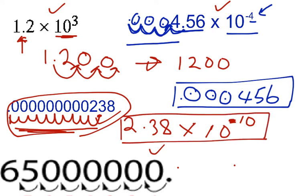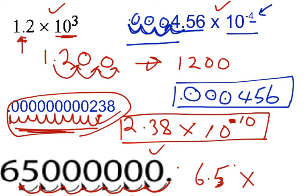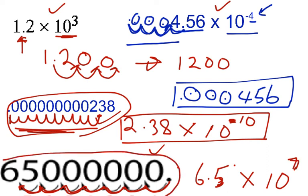This last one is a big number, because the decimal is at the back. We need to put it in scientific notation. So we simply move the decimal again: 1, 2, 3, 4, 5, 6, 7 places. 6.5 is greater than or equal to 1 but less than 10, so 6.5 goes there. We moved the decimal 7 places, so it will be 6.5 times 10 to the 7. It will be a positive exponent since the original number is greater than 1.